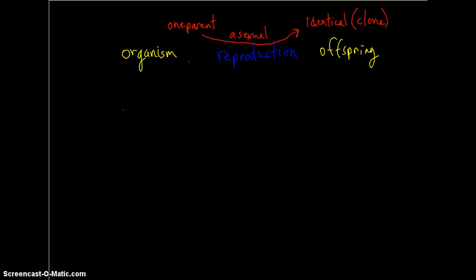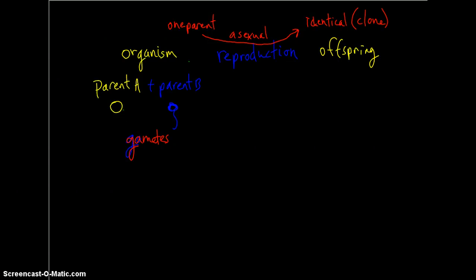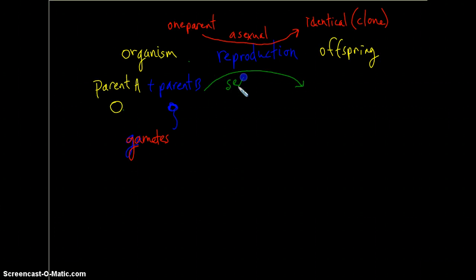We could have parent A producing an egg and parent B producing a sperm. So here we have gametes that are produced, gametes that are created. And those gametes then combine in the process of sexual reproduction to create a unique offspring.